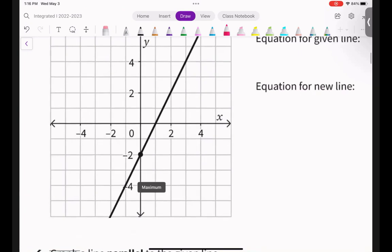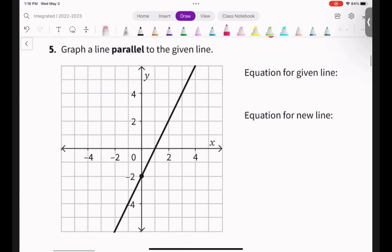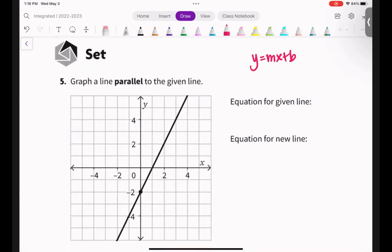So for this equation, it says write the equation for the given line. Look at this equation. I need the m and the b. Remind me what m is. What's m? Yeah, M is slope. Very good. And what is b? The y-intercept. Very good. b is the y-intercept. So the y-intercept is this guy right here.